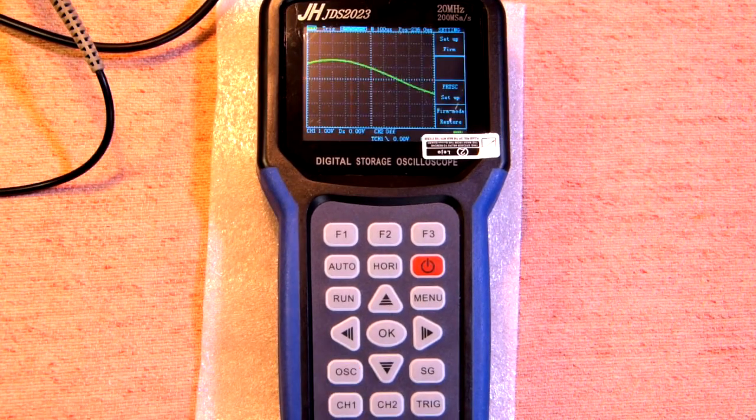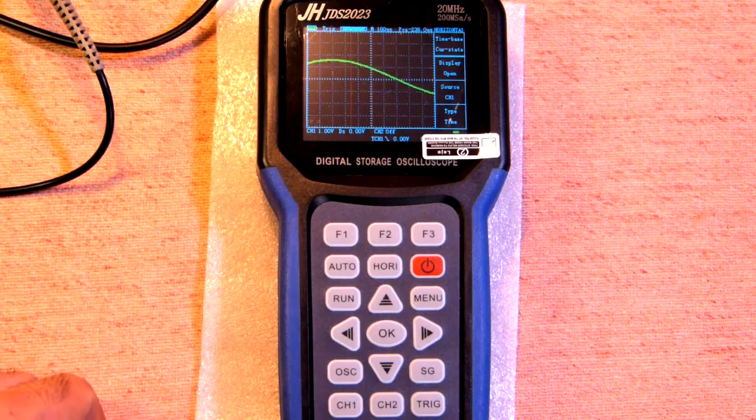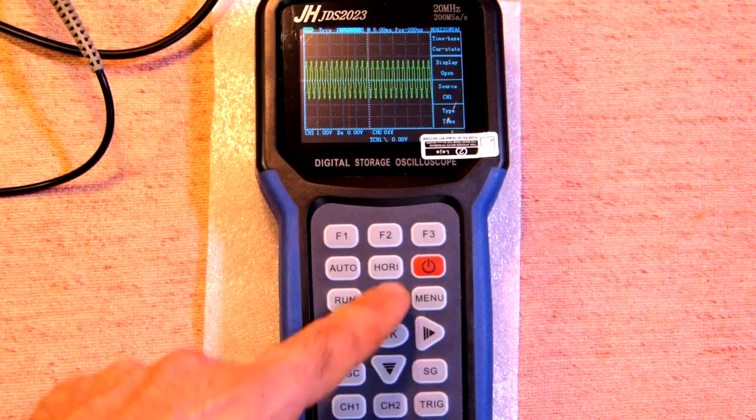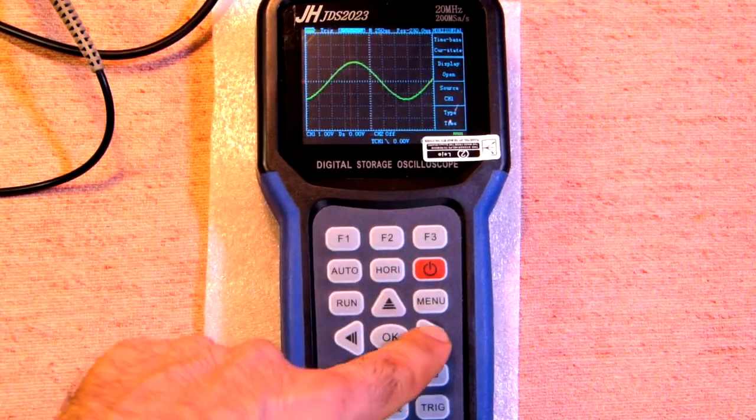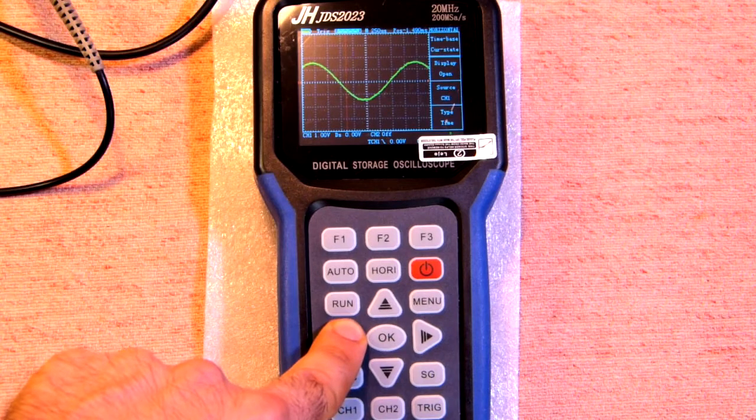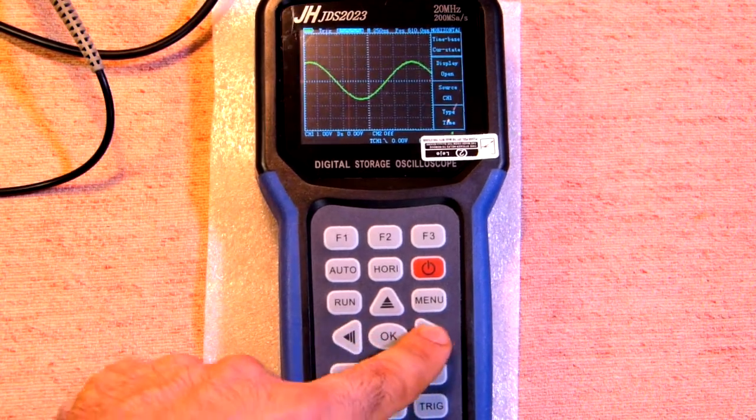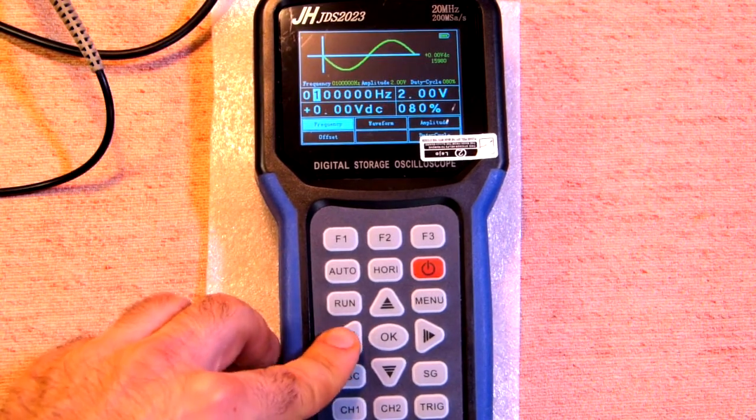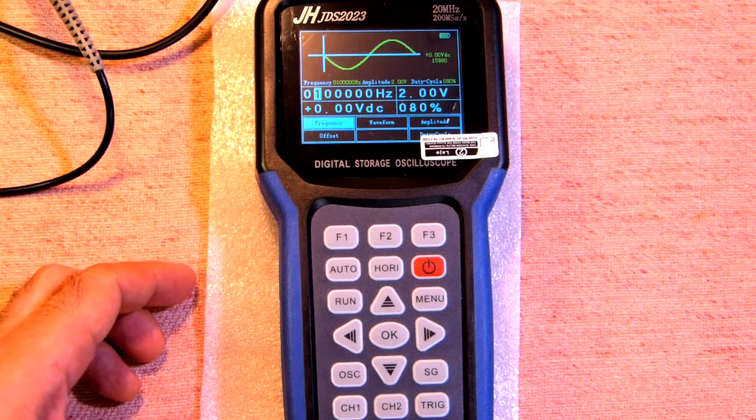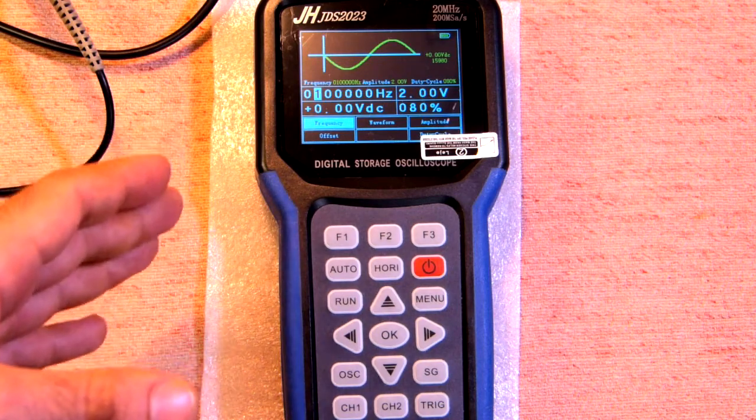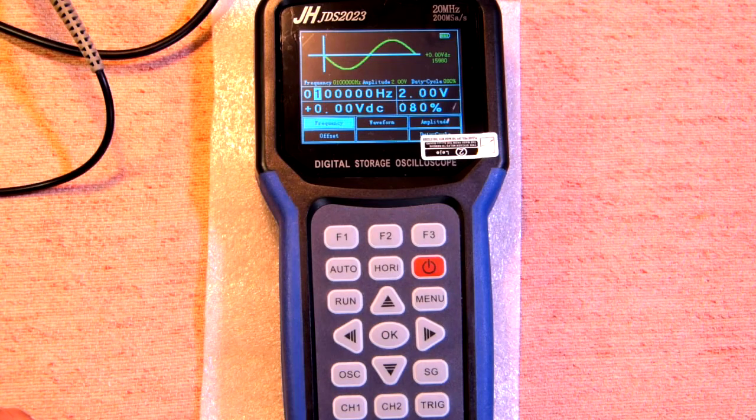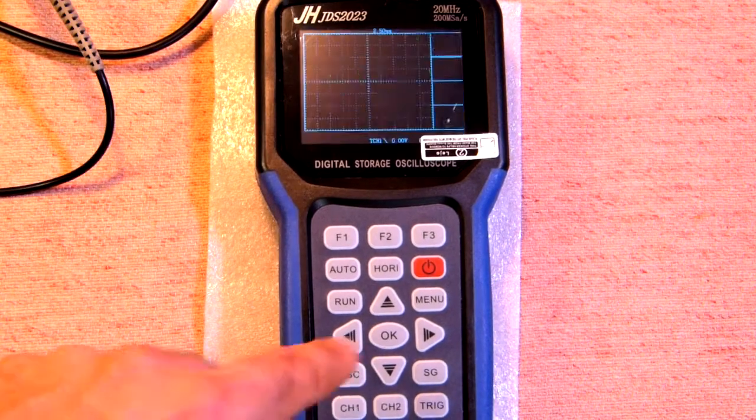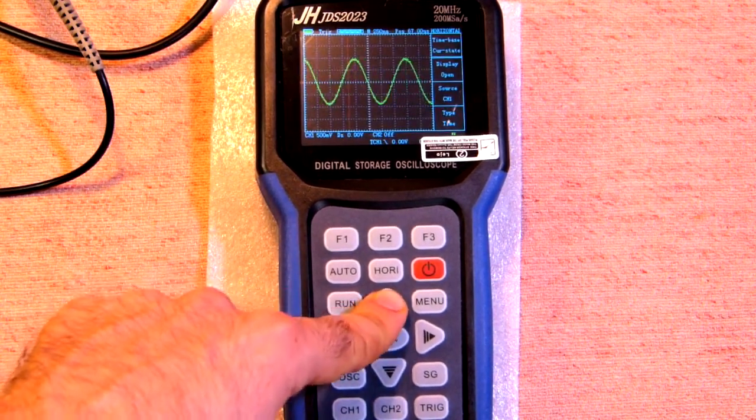Oscilloscope mode, we move to horizontal. Also we can move it to the left or to the right. Now let's change to 1 MHz. So for sine mode the maximum frequency is 5 MHz and for the rest functions and rest waveforms the maximum is 1 MHz. Okay, oscilloscope mode, so it's pretty decent.